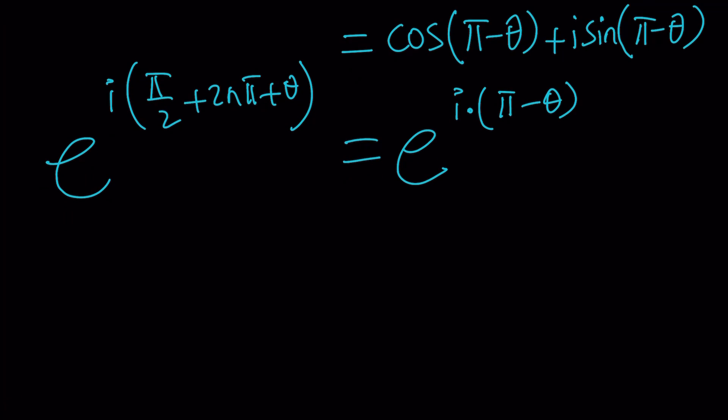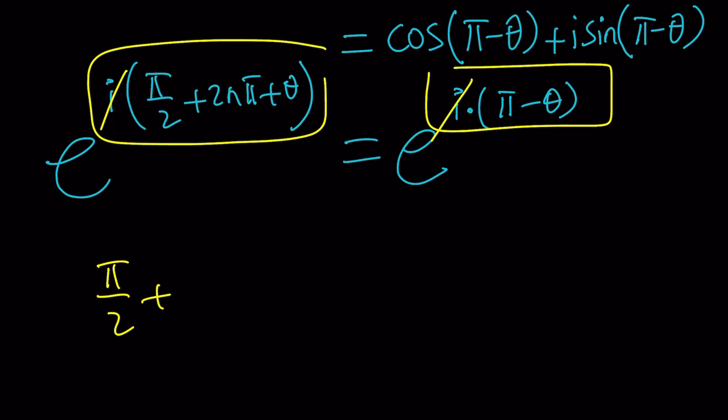Now, set these exponents equal to each other, and cancel out the i's, and you're going to end up with something like this. Pi over 2 plus 2 pi n plus theta equals pi minus theta from here.